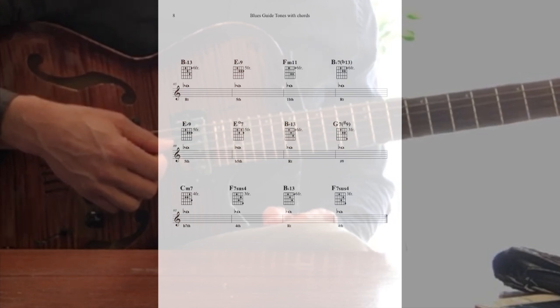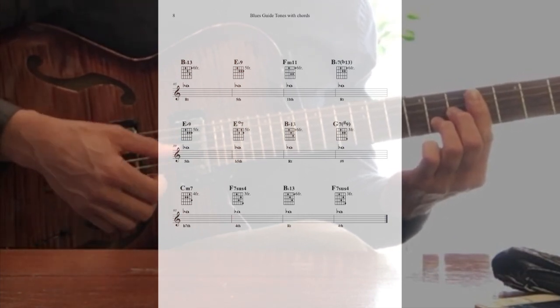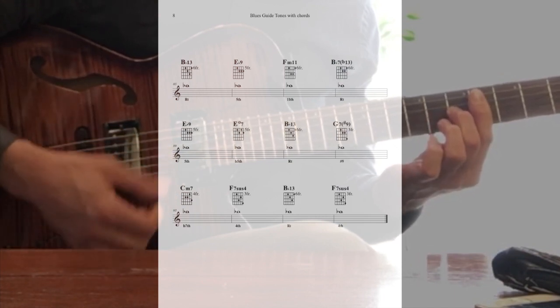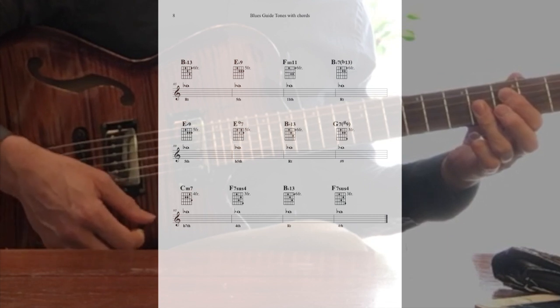In a B-flat blues, I'm just going to put that B-flat on top of the one chord, but we'll make the one chord a 13, so it's not just a boring seven chord. And then the E-flat nine, it becomes the fifth of that chord.